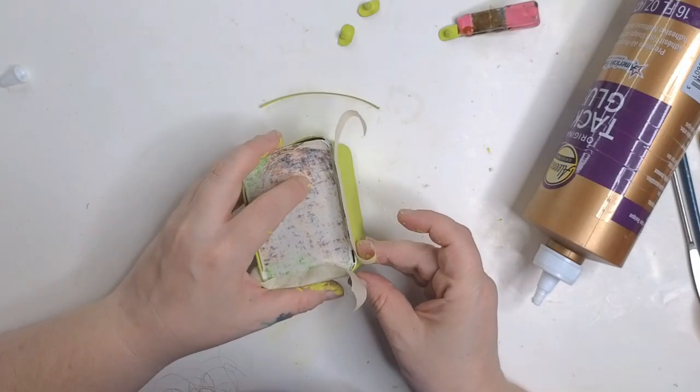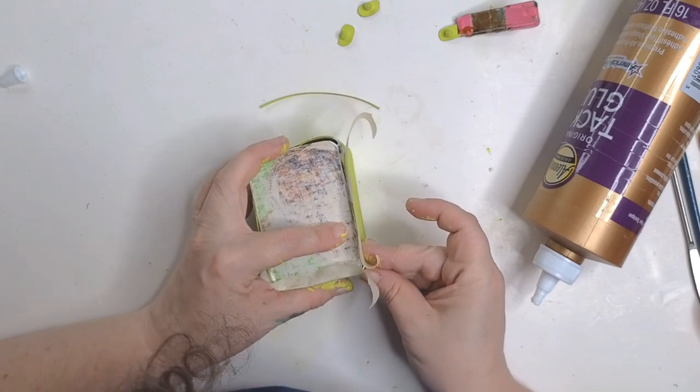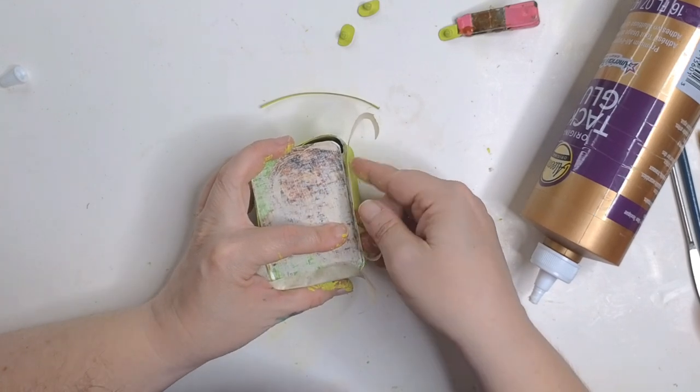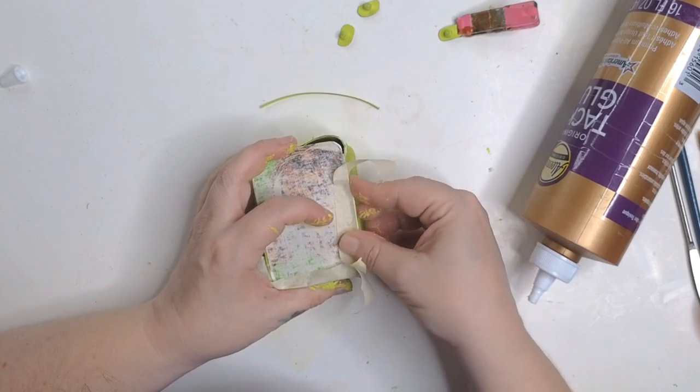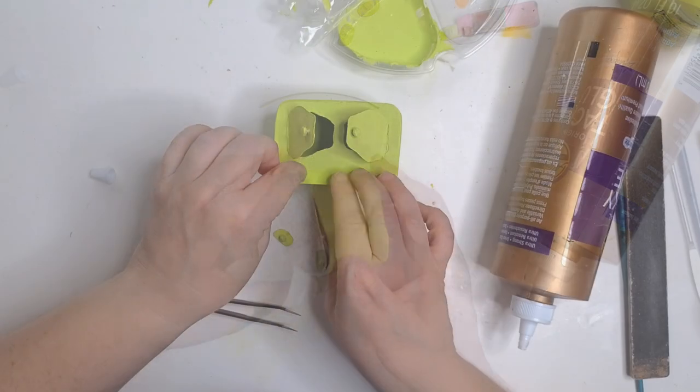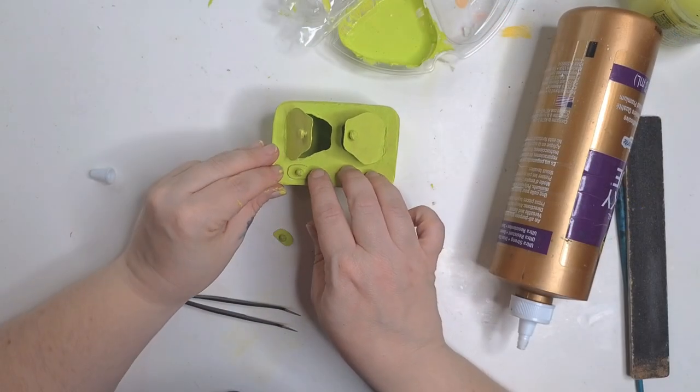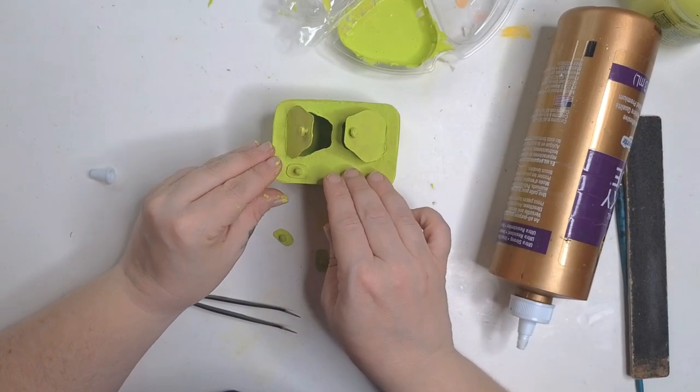Now we can close up the cupboard by gluing on the back half. I did it the same way as I did the front, by starting at one edge and going all the way around until it's all glued together. Once it's had a chance to completely dry, we can glue on our tiny doors.